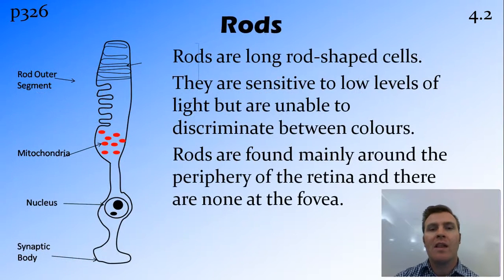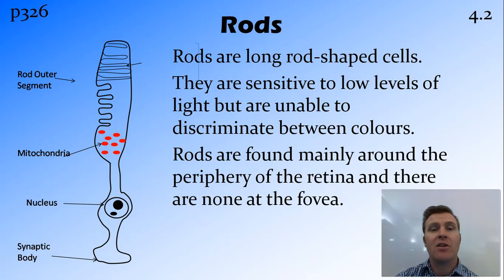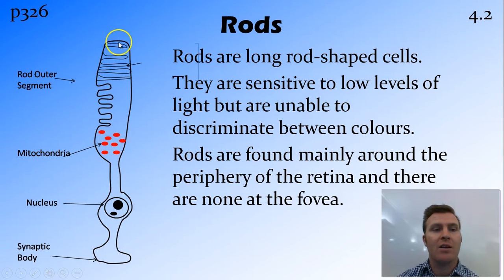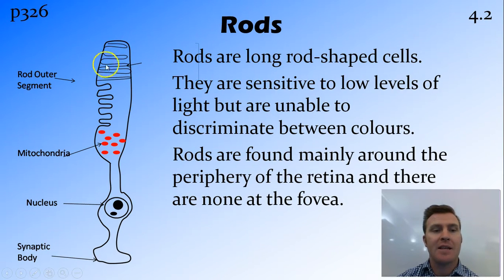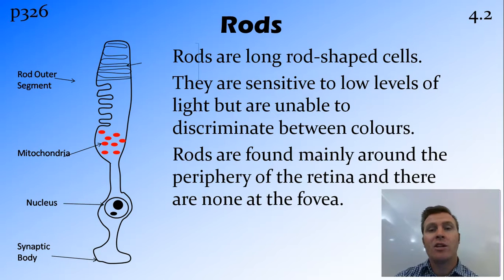On the other hand, the rods are found on the outskirts of the retina, and as you move towards the fovea, there are actually no rod cells in the fovea. Instead of having that cone at the top, rods have a long rod-shaped outer section with stacks of membranes in it. Unlike cones, the rods are sensitive at low-level light, but unfortunately they can't distinguish between colours as the cones can.